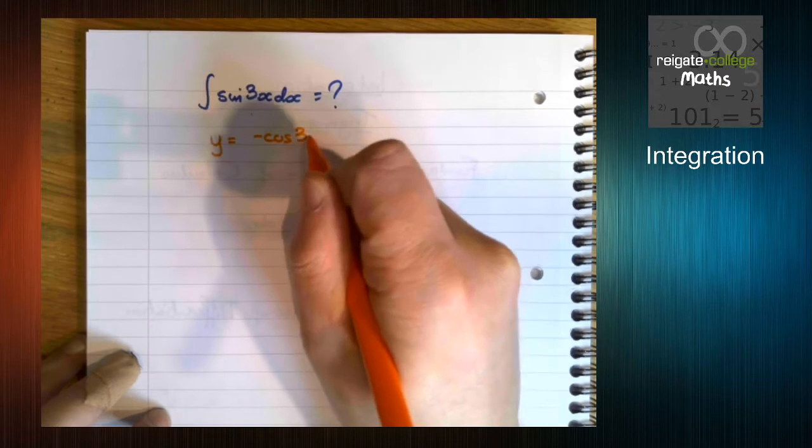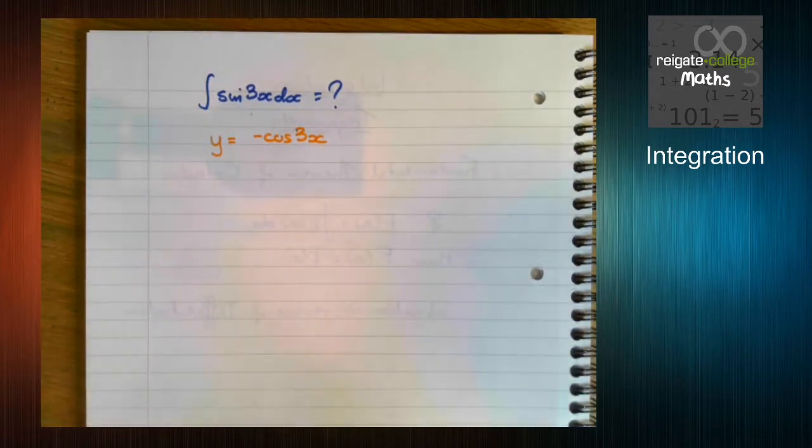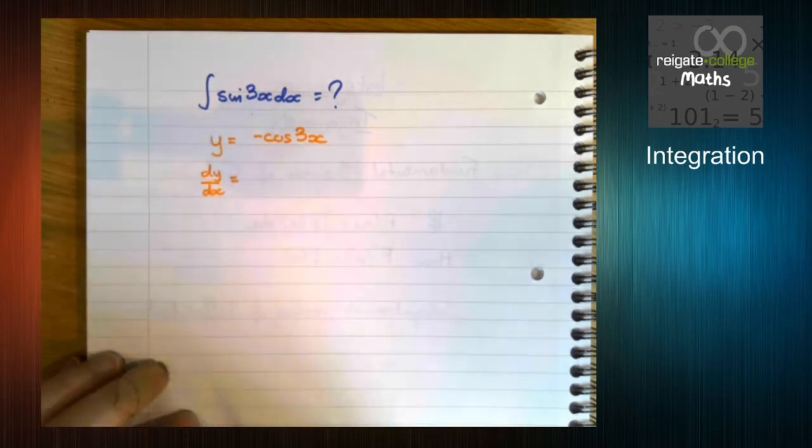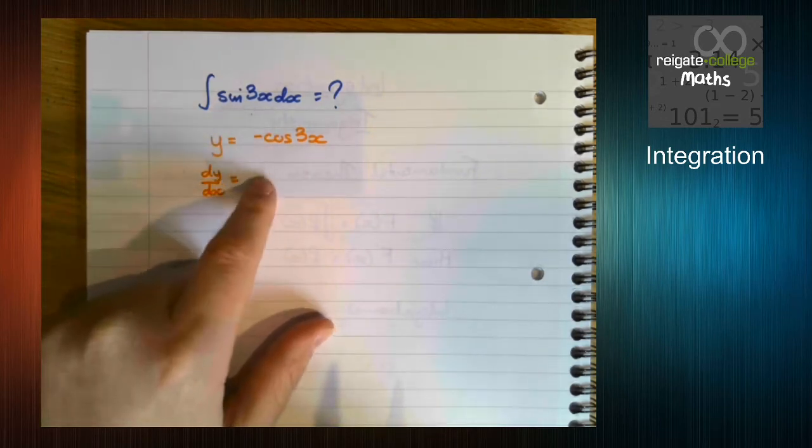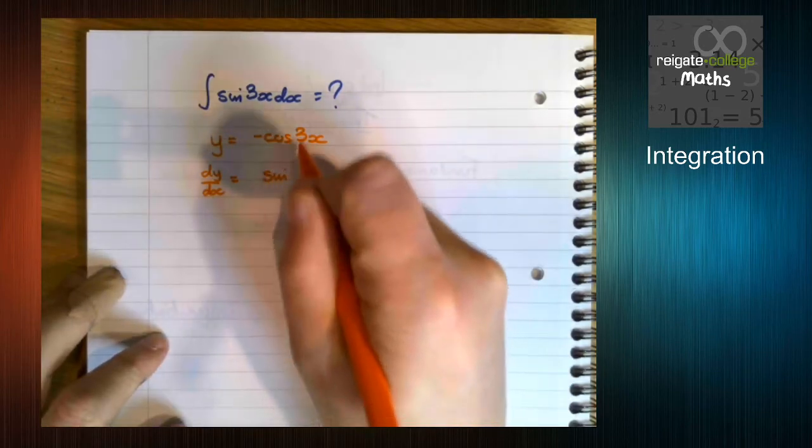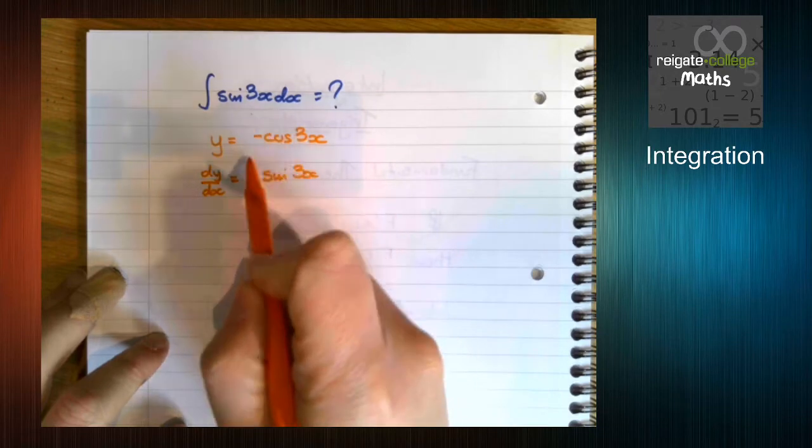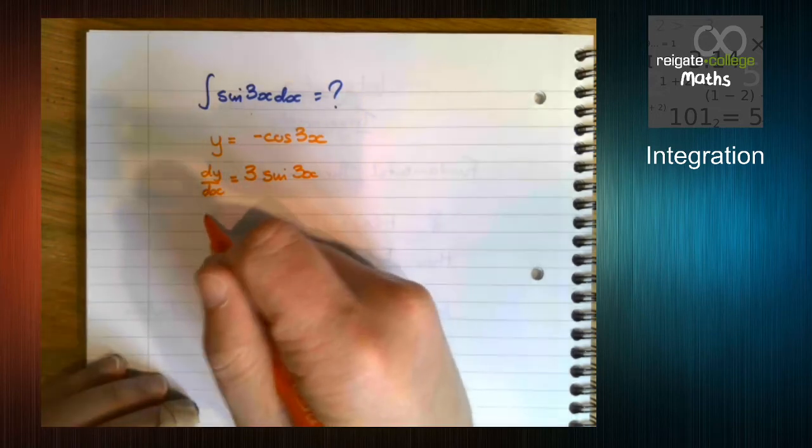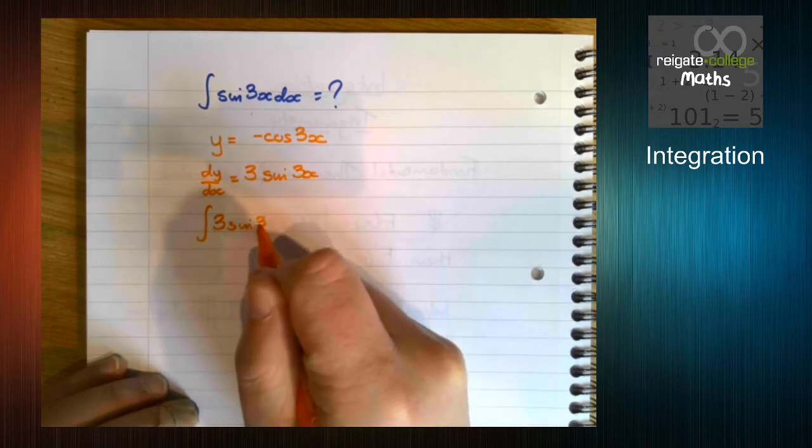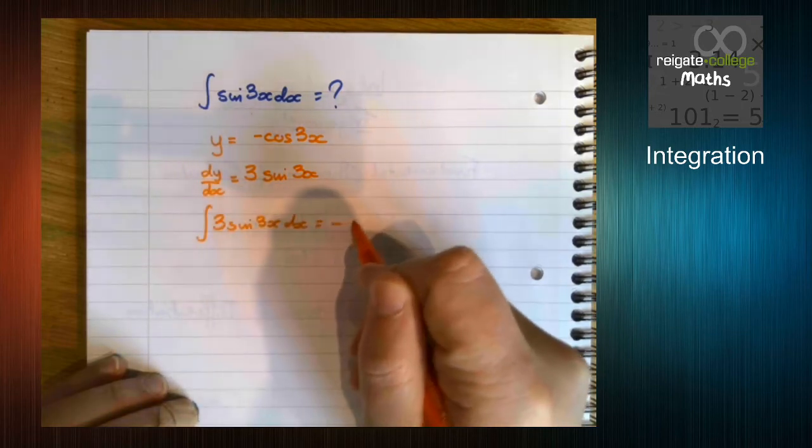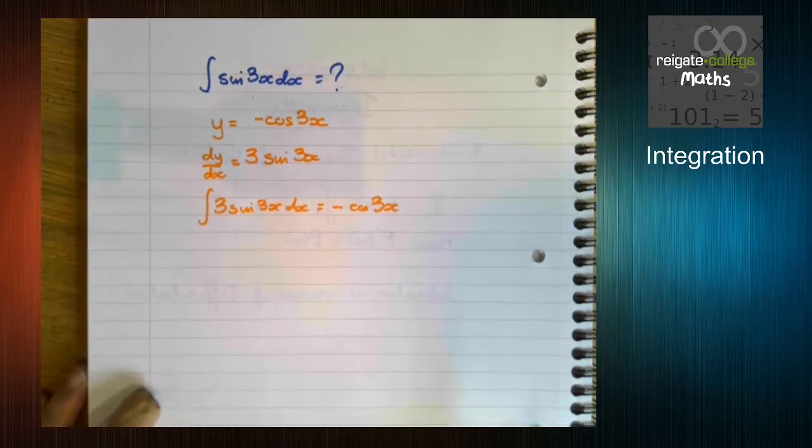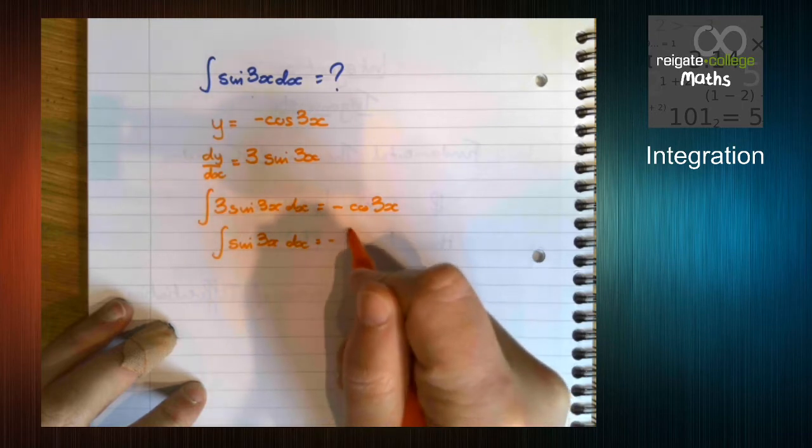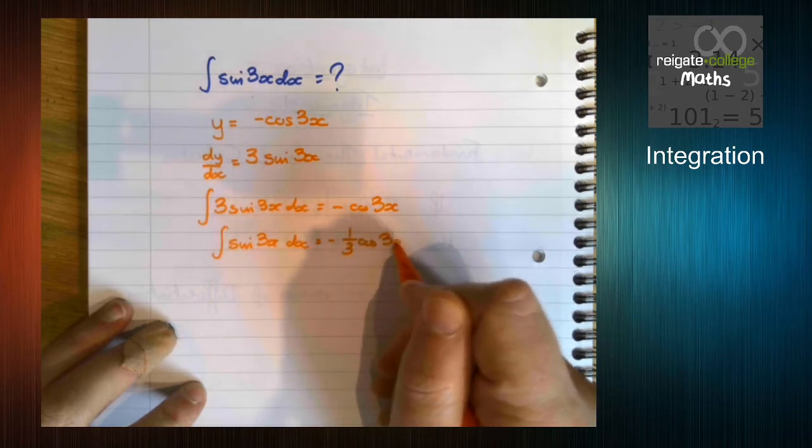So let's start thinking about it like this. If we have y equals cos 3x, what's that going to differentiate to? Well, cos differentiates to sine. The 3x stays there, and we multiply by the 3 on the front. So what this is saying is now if we integrate 3 sine 3x, we get minus cos 3x plus c. But if we integrate sine 3x, that's going to go to minus 1 third, cos 3x plus c.